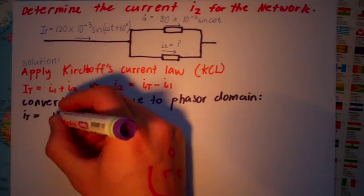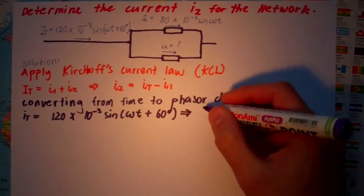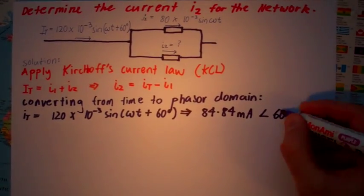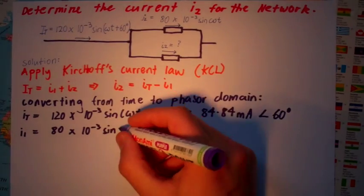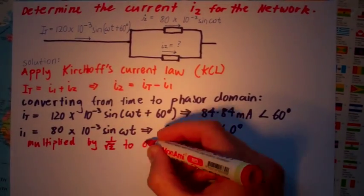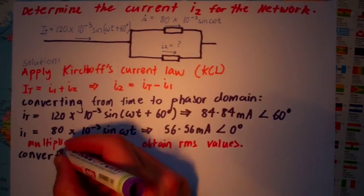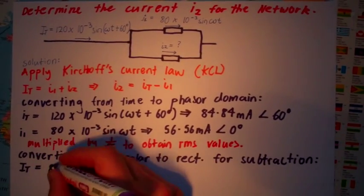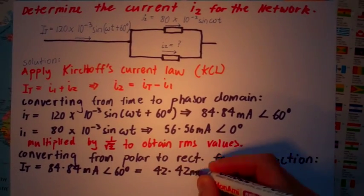First, we have to convert from time to phasor domain. The amplitude value is multiplied by 1 over root 2 to obtain the RMS value.